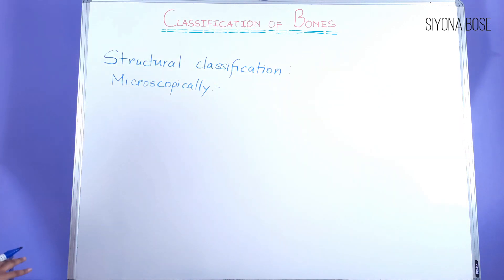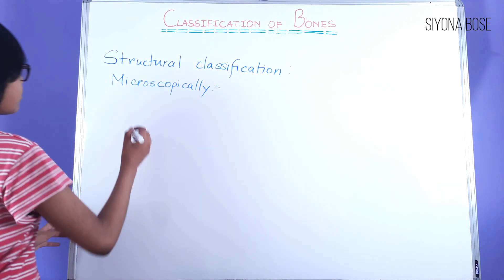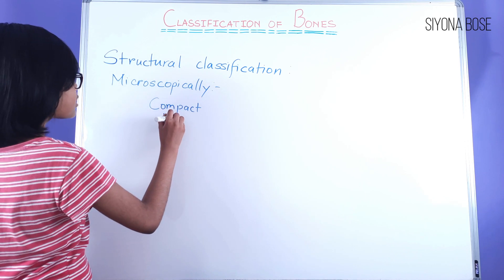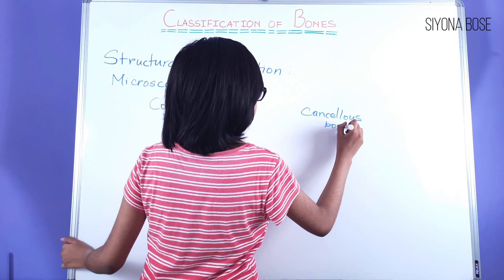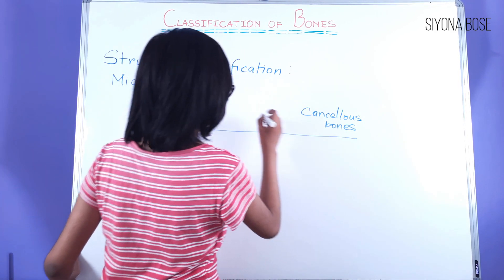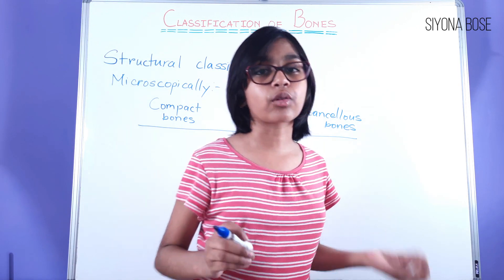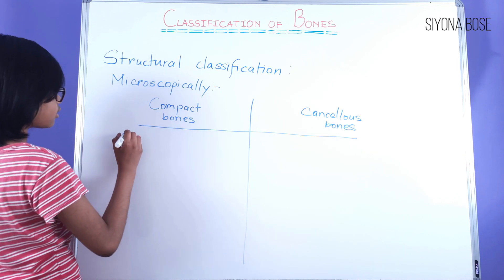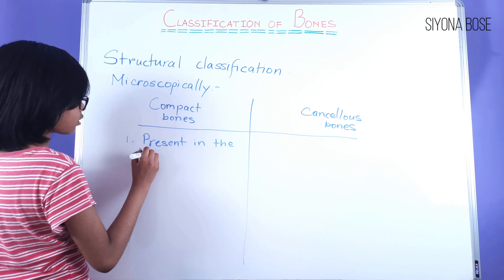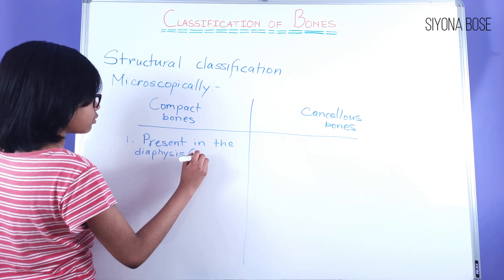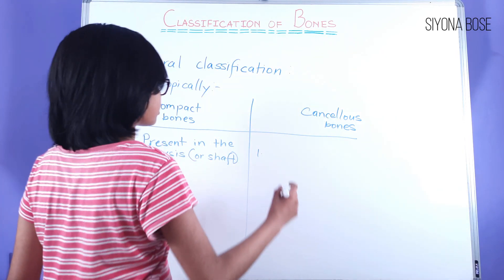Now, looking at things microscopically, but before we begin, I would like to discuss some differences between compact bones and cancellous bones. Firstly, compact bones are present in the diaphysis, or shaft — that means the middle part between the ends. And cancellous bone is present in the epiphysis, that means the ends.